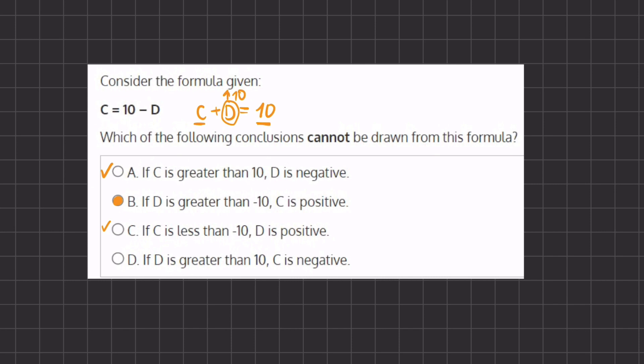So d is also correct and therefore will not be our right answer because we are looking for the wrong statements. And so b is the only statement that is incorrect and therefore will be our answer.